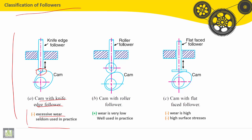Second type is called cam with roller follower. We have a roller here, so wear is very low and well used in practice.